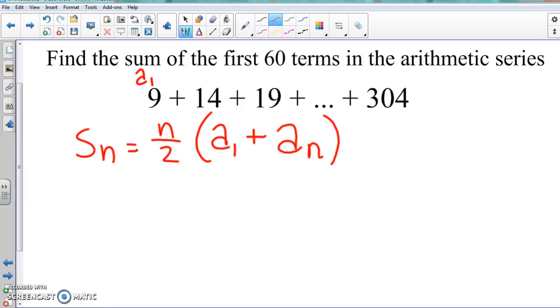We said a_n is the very last term or the term that we're looking for, and here we're looking for the 60th term. That's the sum of 60 terms. So it means this is the last number here. That means that it's our a_n.